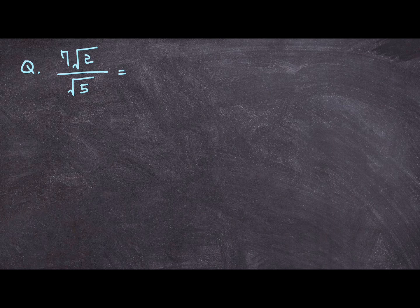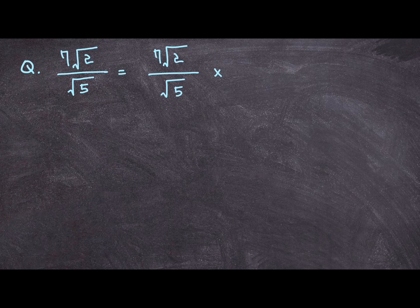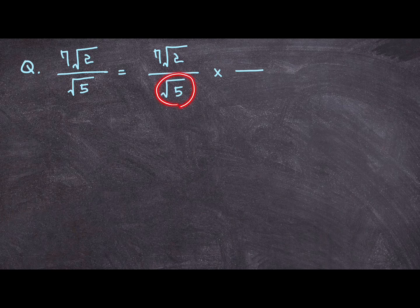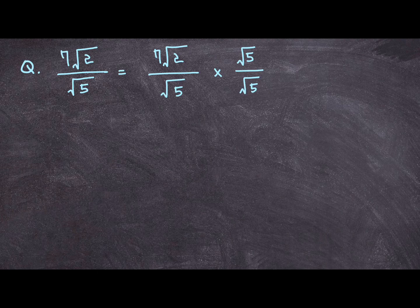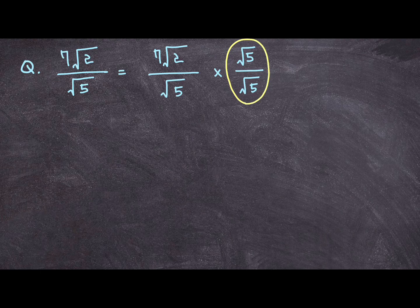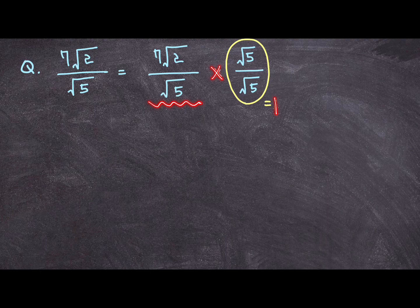What you do is you copy down the original expression and then you multiply this original expression with a number 1. But instead of writing 1, you write, you take that square root expression that you want to get rid of. Take that into the numerator and denominator. Now this expression, square root of 5 over square root of 5 is equal to 1. And multiplying 1 to a value will not change the value of the original value.